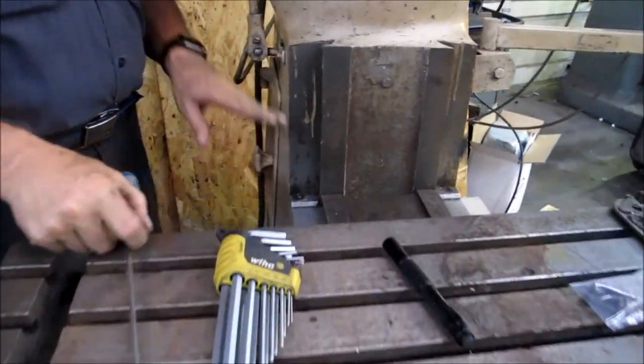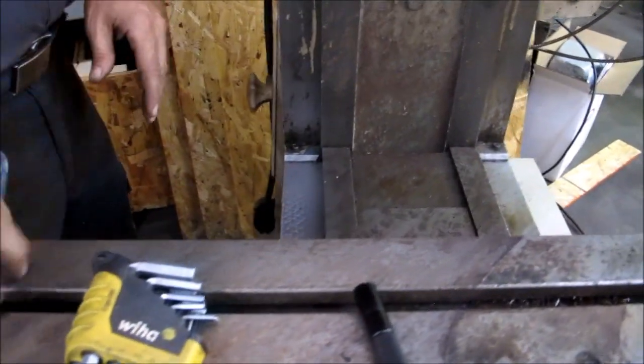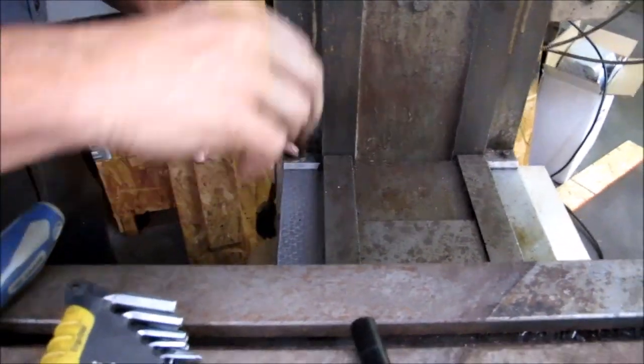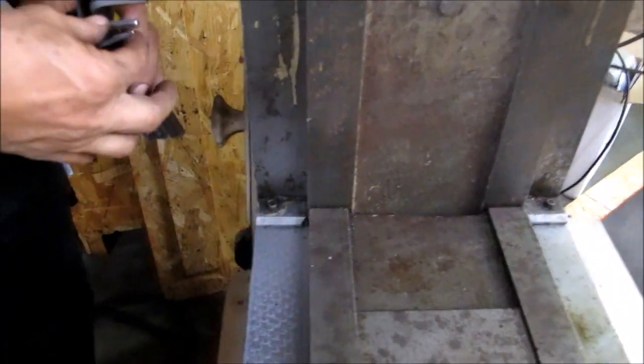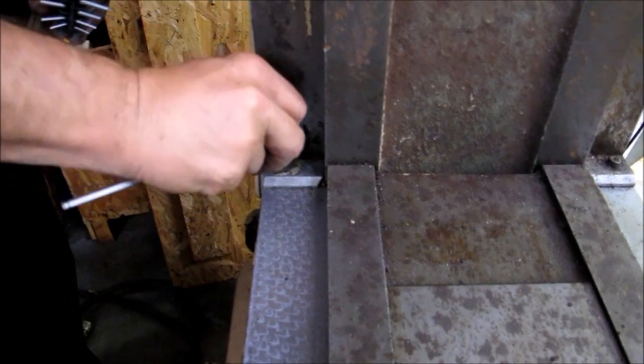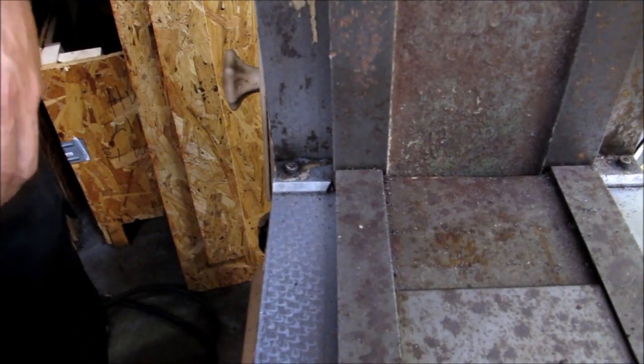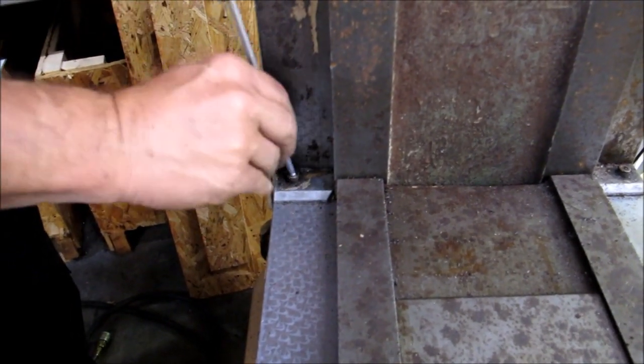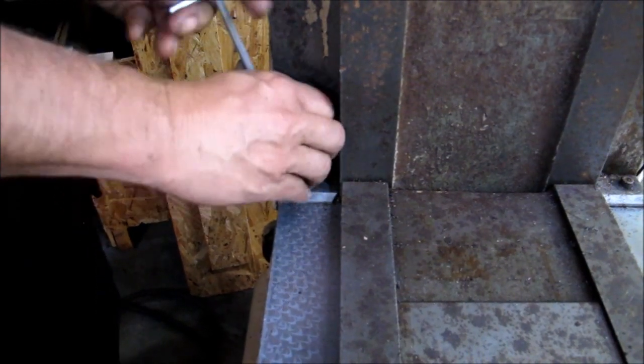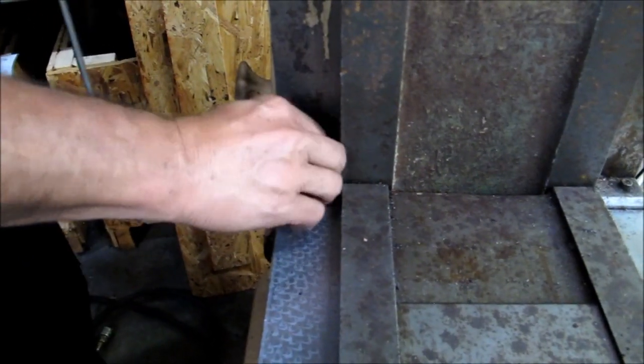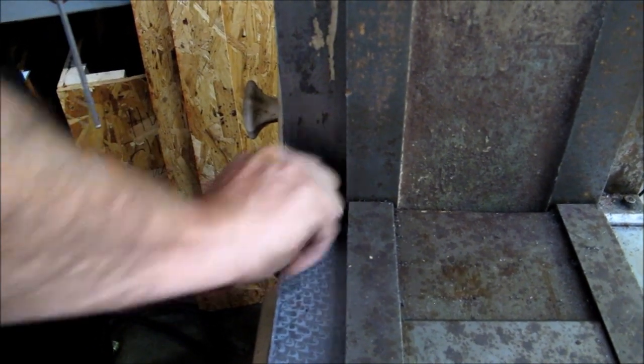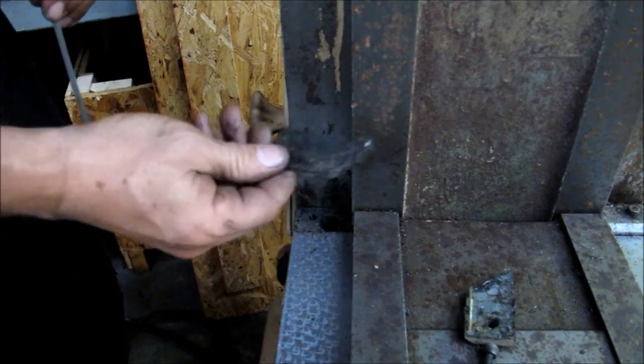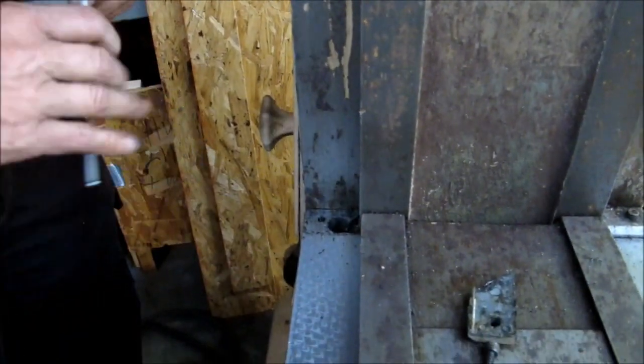Now, the Z-axis elevating gib is, again, on the left side, underneath this cover. This is where you probably will need Allen wrenches. Take the cover off. Same thing. See how hard and crusty and nasty that is? It's a good time to change it.